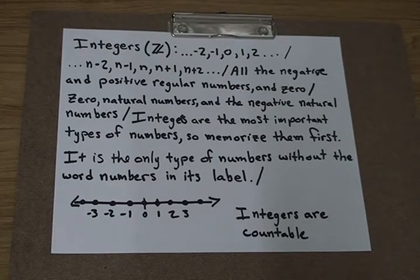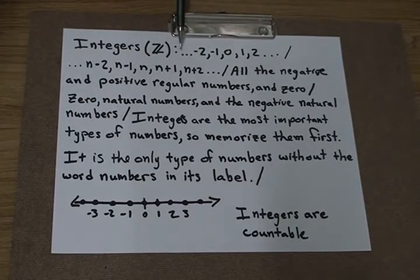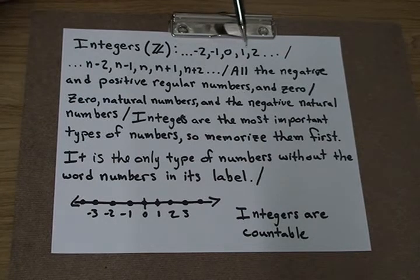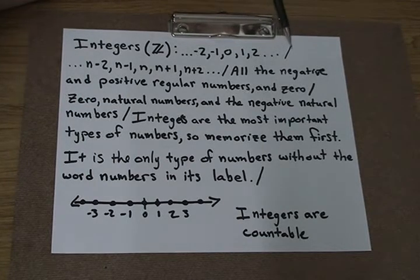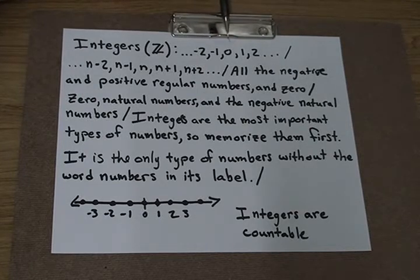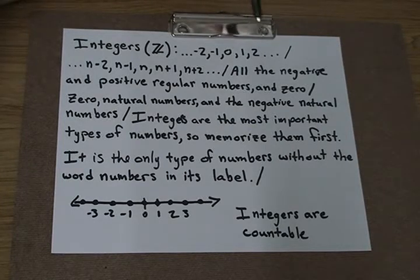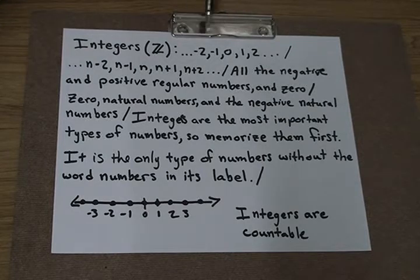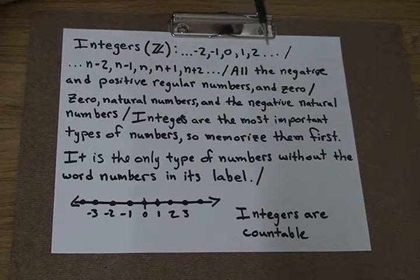The next type of numbers are the integers. The integers are represented with the bolded letter Z. Some examples of the integers are starting at negative infinity, as far as we can count into negative 2, negative 1, 0, 1, 2, and then as far as we can count going towards positive infinity. For integers, it's good to think of it as starting at 0, going both directions, going in the positive direction and going in the negative direction. So counting from there: 0, -1, -2, -3 counting that way, and 0, 1, 2, 3 counting this way.